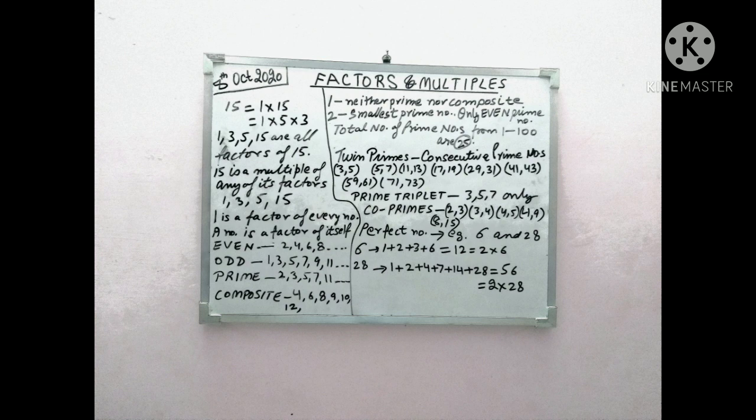Important thing we have to note down here is that 1 is neither prime nor composite. 2 is the lowest prime number. 2 is the only even prime number. Rest all other even numbers are actually composite numbers.